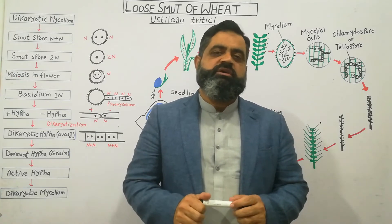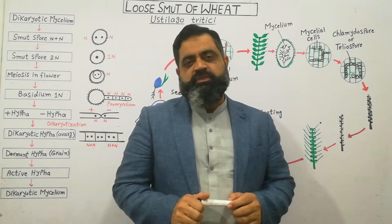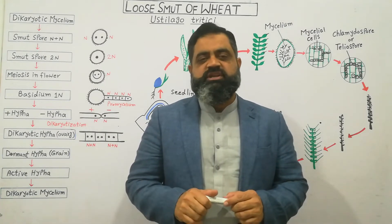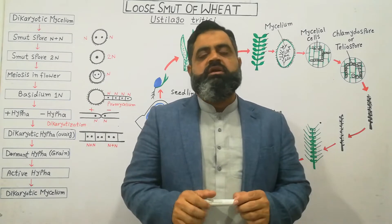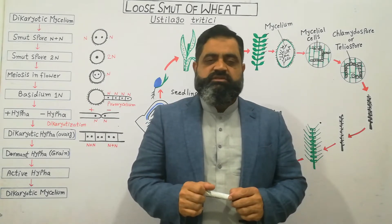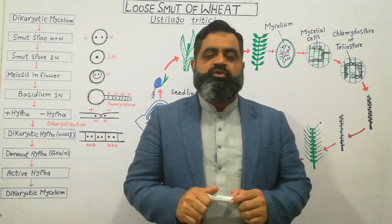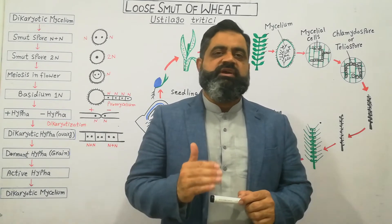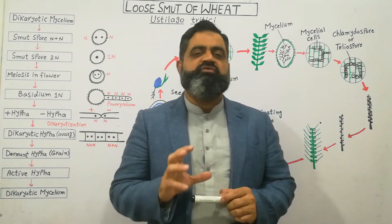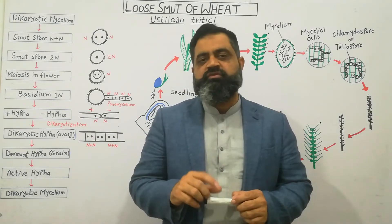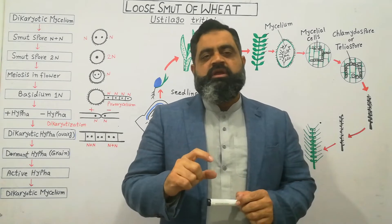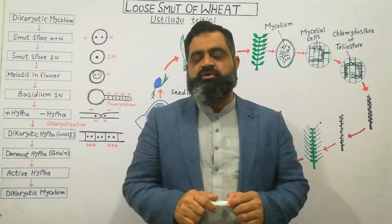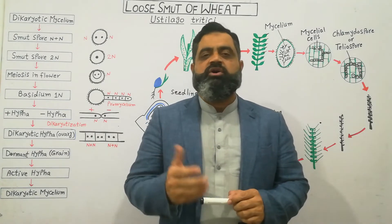It is also known as Ustilago tritici. It is a special type of fungus which infects cereal crops like wheat, rice, corn, and some other cereal crops like barley. There are different species which infect different types of cereal crops. Today we are going to take an example of a wheat crop which is infected by a fungus known as Ustilago tritici, which is commonly known as smut.